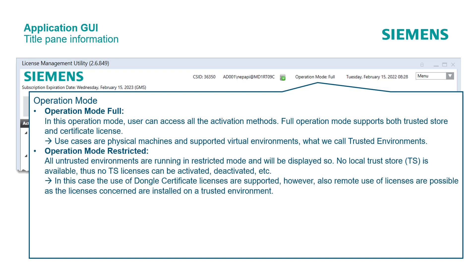All untrusted environments are running in restricted mode and will be displayed as such. No local trust store is available, thus no trust store licenses can be activated, deactivated, etc. In this case, the use of dongle certificate licenses is supported; however, remote use of licenses is also possible, as the licenses concerned are installed on a trusted environment.